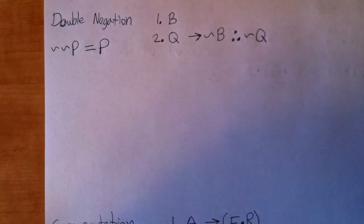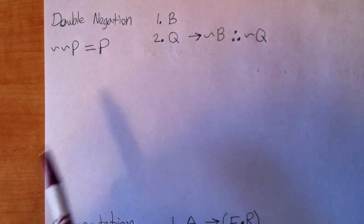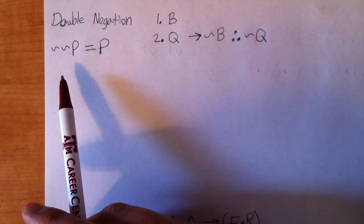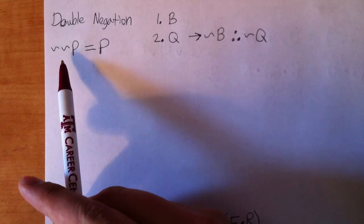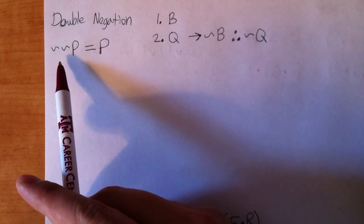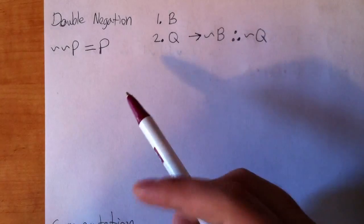Double negation is the first of our equivalency rules, and basically what an equivalency rule, as its name suggests, means something is logically equivalent to something else. So that's basically the definition, but it's a lot easier showed than explained. So with our first rule, double negation.